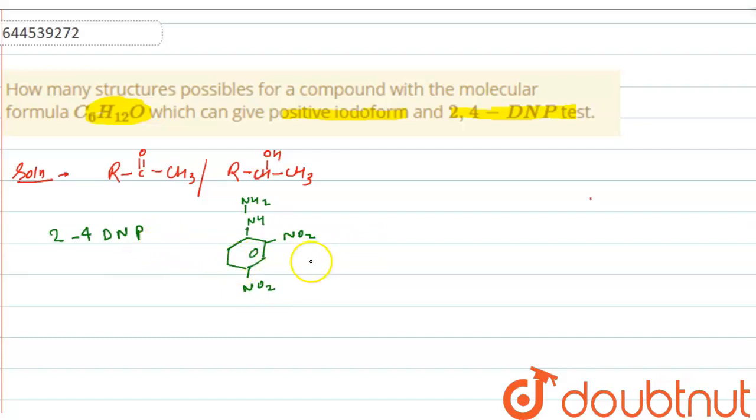The aldehydes and ketones react with 2,4 DNP. Actually, it reacts with this nitrogen and an orange yellow precipitate is formed.